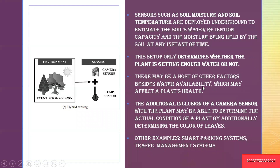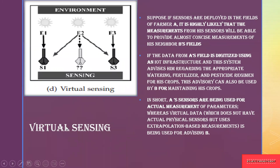There may be a host of other factors like water availability that affect plant health — some plants need a lot of water to grow, while some don't need water at all and grow with the help of sunlight. All these factors can be monitored using hybrid sensing. The camera used as a sensor can determine the actual condition of the plant, detecting even a small change in leaf color. Hybrid sensing can also be used in smart parking systems and traffic management systems.